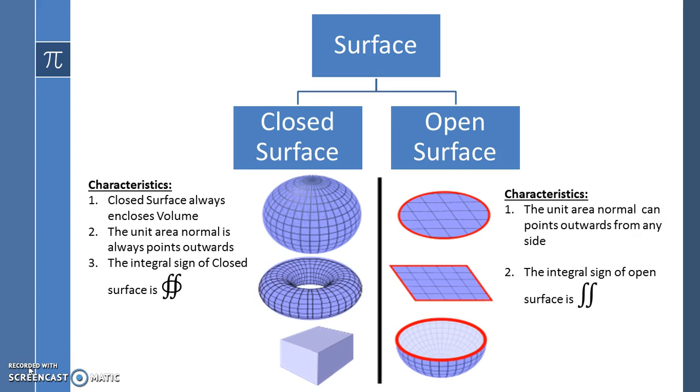There are basically two types of surfaces: closed surface and open surface. The characteristics of the closed surface: closed surface always encloses a volume. The unit area normal is always pointing outwards to this surface. The surface integral is denoted using a small circle on the integral sign.